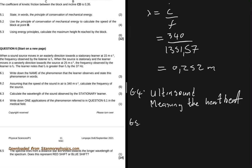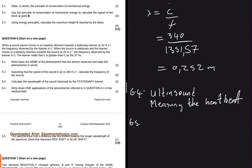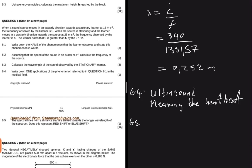Question 6.5 says: the spectral lines from a star are shifted towards the longer wavelength of the spectrum. Does this represent red shift or blue shift? Longer wavelength means red shift. If it were a shorter wavelength, that would be blue shift.